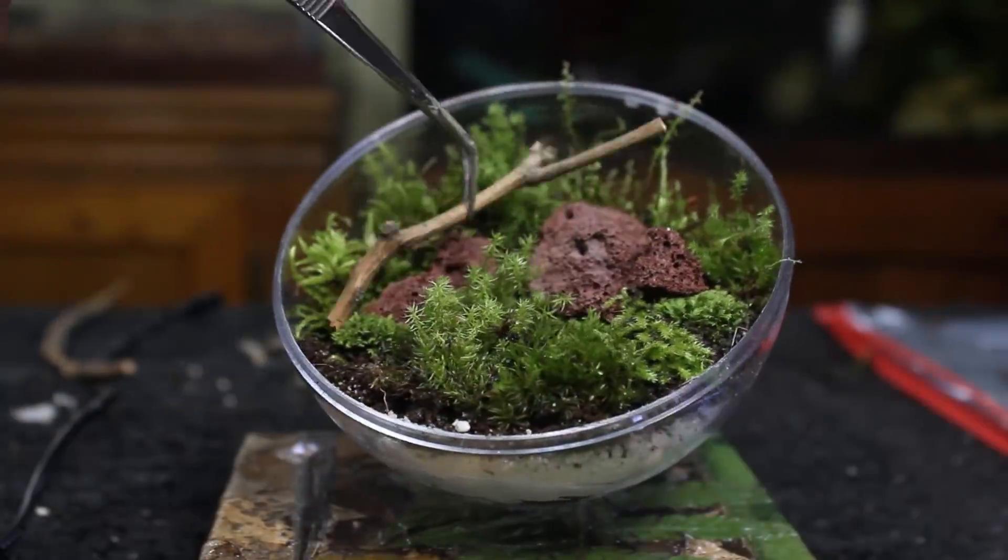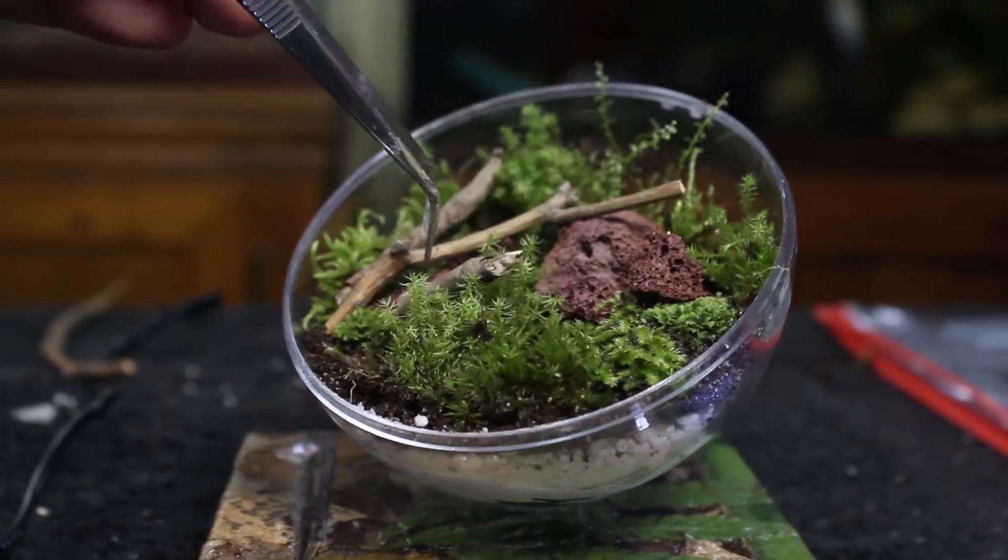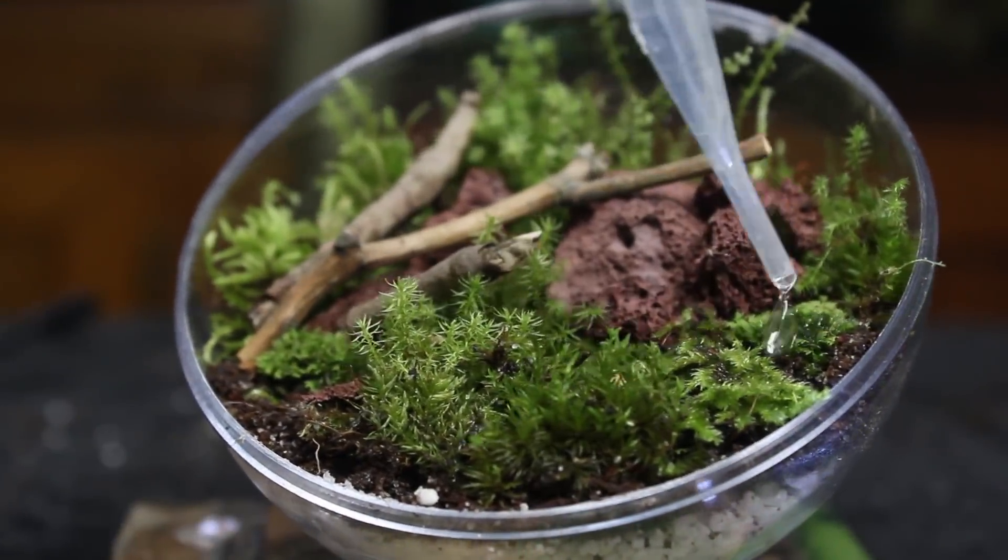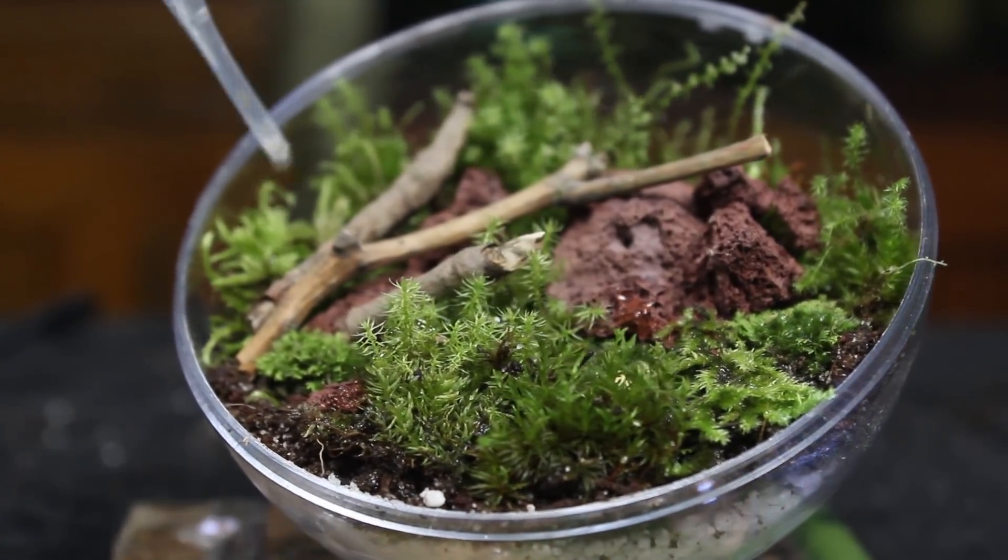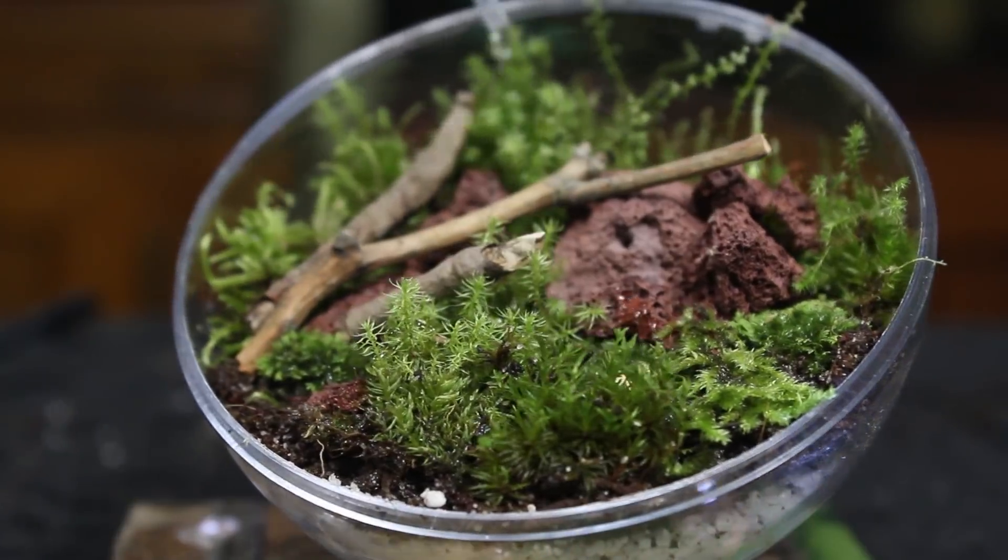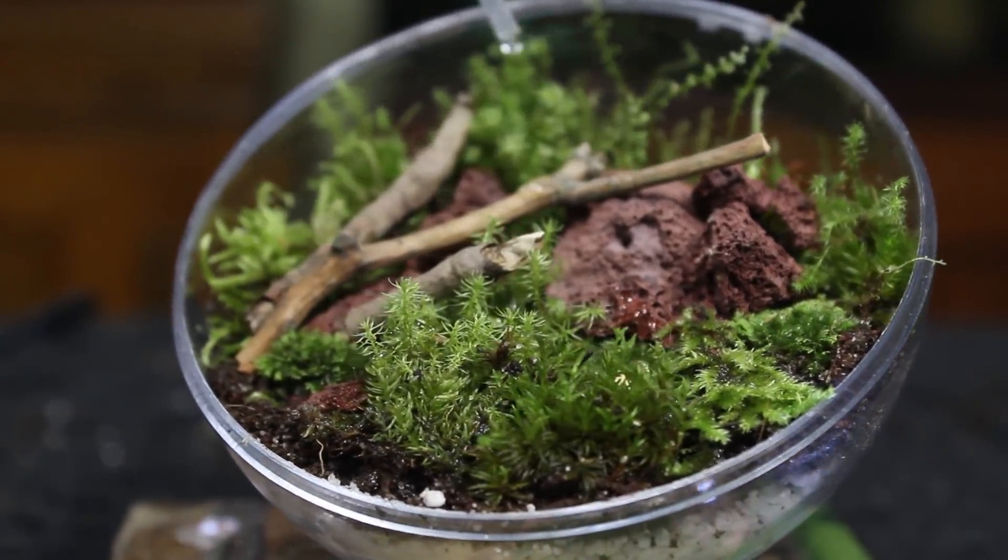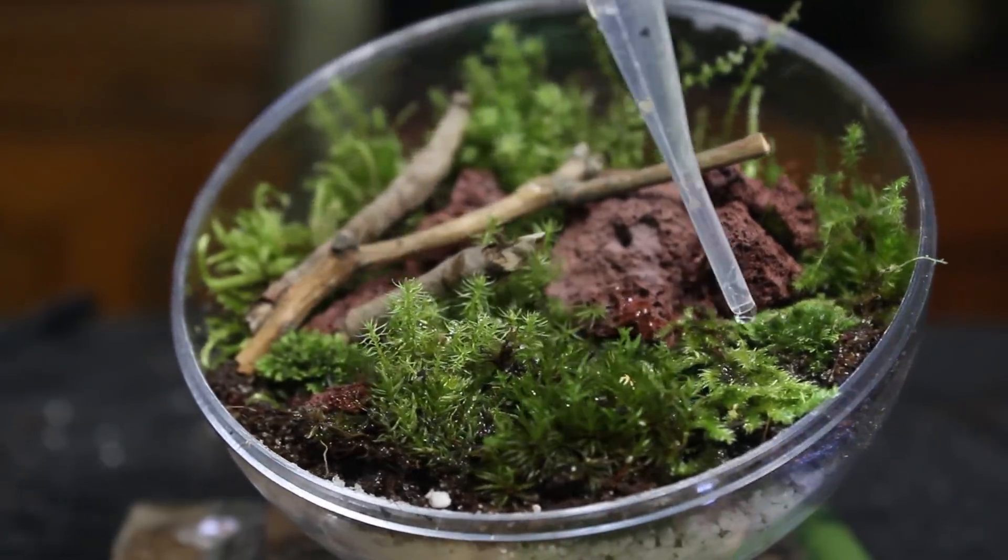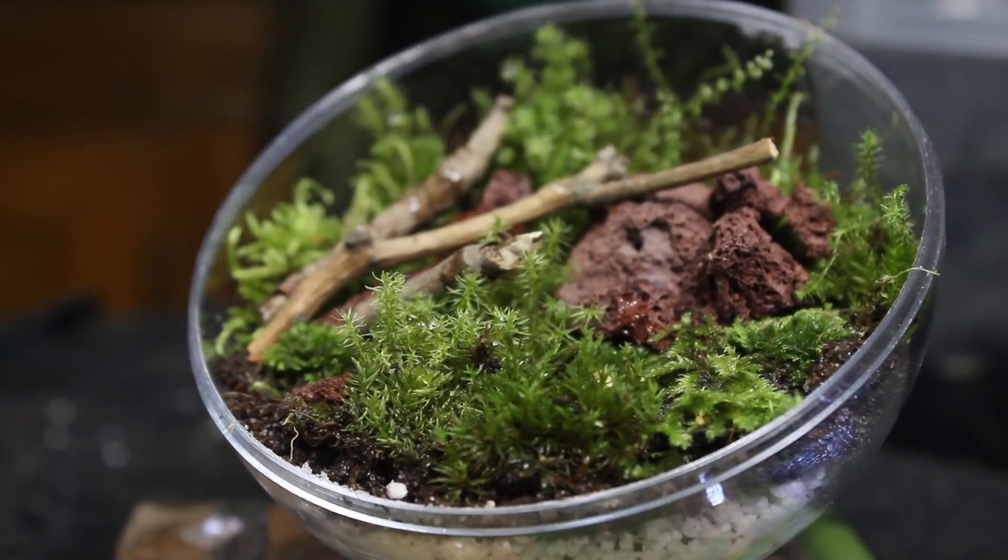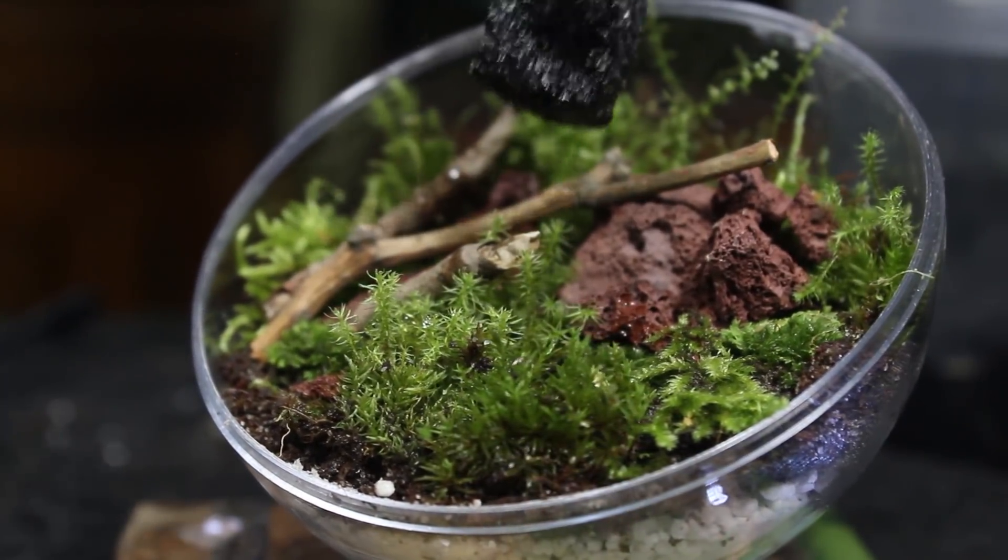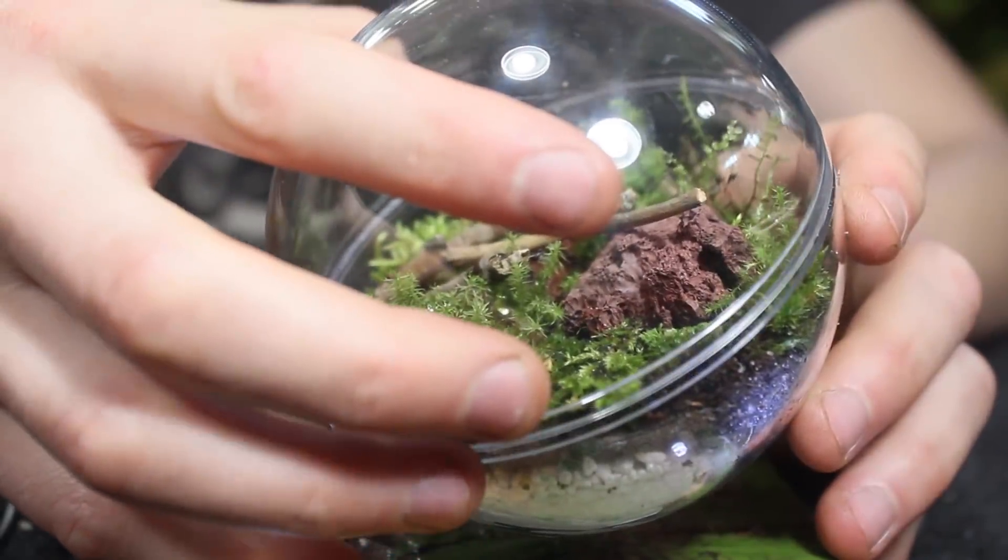I then completed the design with a few accent twigs. From there I added a few drops of water using a pipette. This might not seem like a lot of water, but I pre-soaked the substrate ahead of time. This means that most of the necessary moisture is already present. Finally I incorporated some springtails by shaking them off of a piece of charcoal from one of my master cultures, and to complete the build I closed up the terrarium.